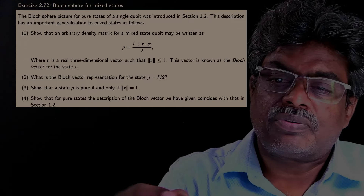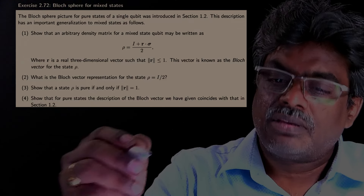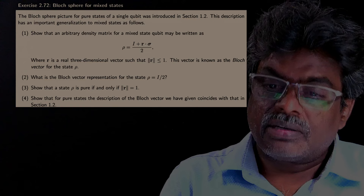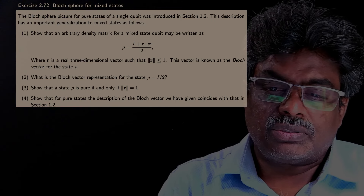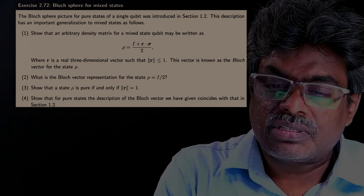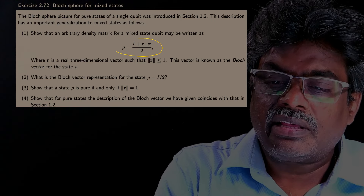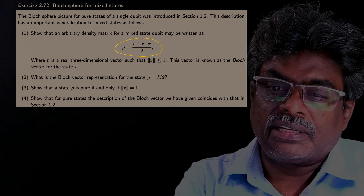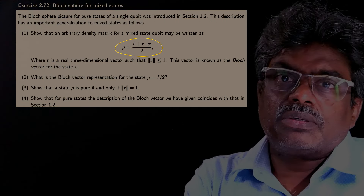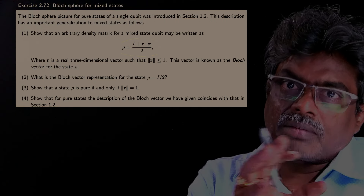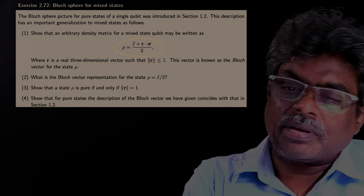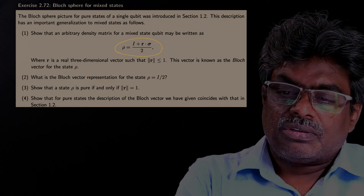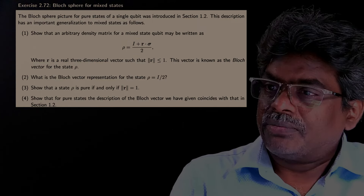Welcome to UV Physics Academy. Here they are asking to show this relation. Earlier we have used the density operator rho equal to I plus r-bar dot sigma by 2. So let us derive this.